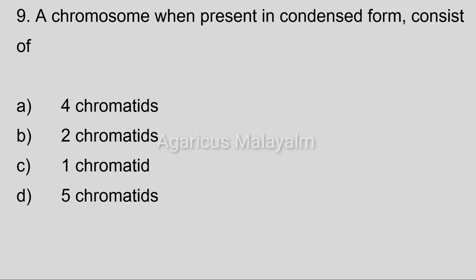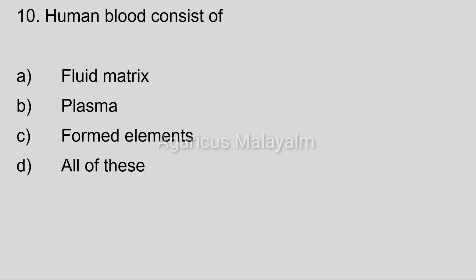Ninth question: A chromosome when present in condensed form consists of? Option A: 4 chromatids. Option B: 2 chromatids. Option C: 1 chromatid. Option D: 5 chromatids. Correct answer: Option B, 2 chromatids.